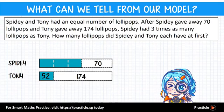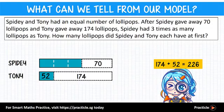If you said the second one, that's actually the better choice. Since we already have the value of 1 unit, we might as well use that to find the answer. So let's add 52 to 174, which gives us a final answer of 226. Last question down.